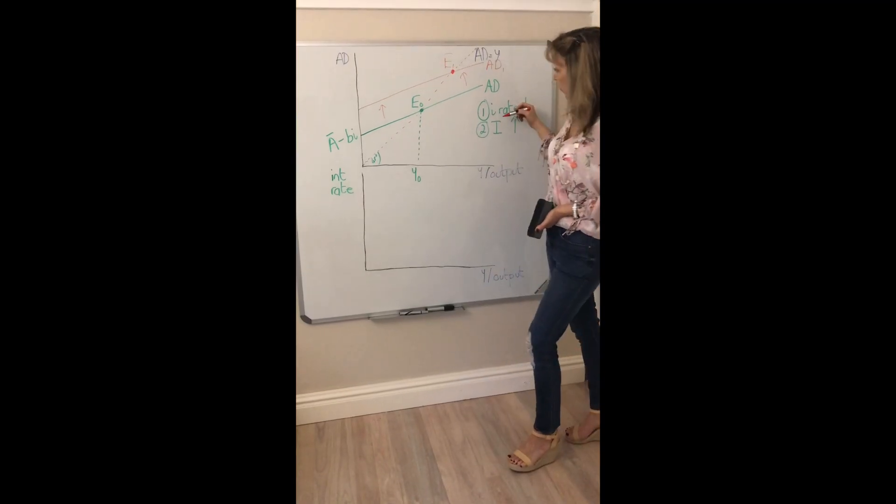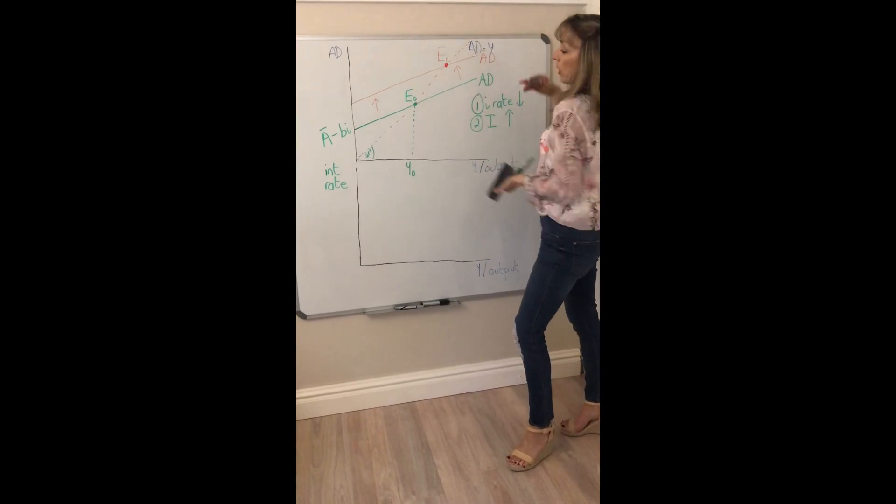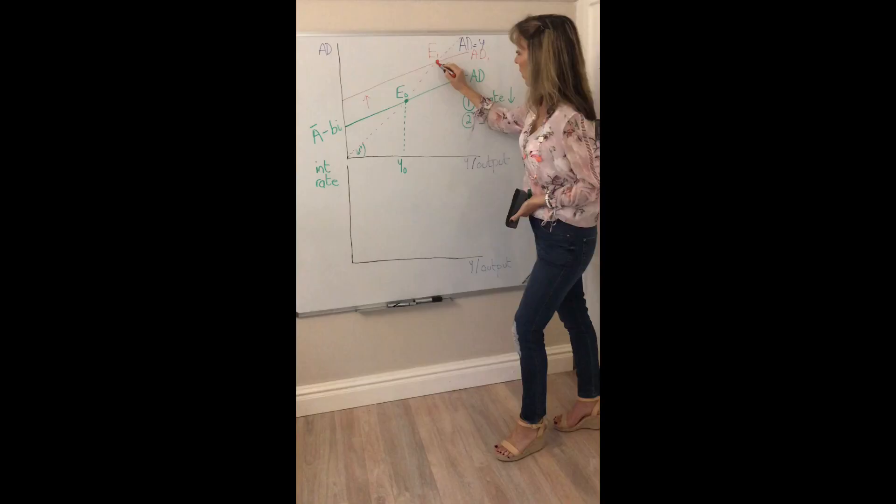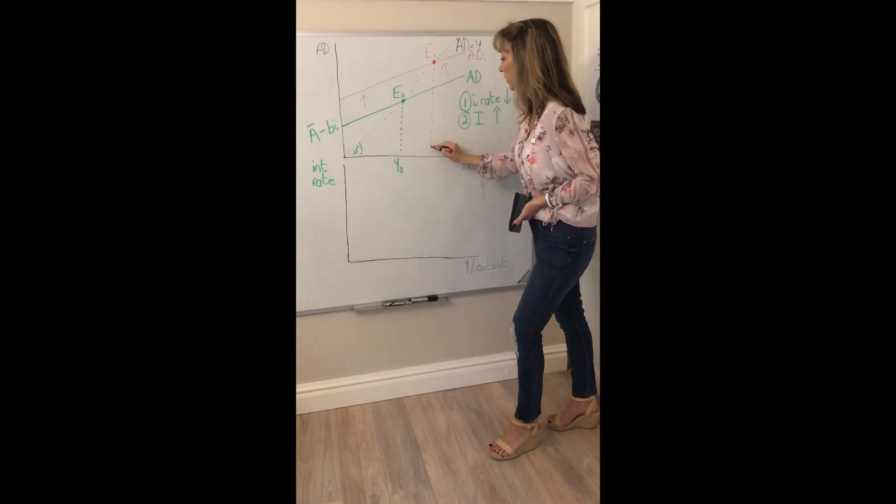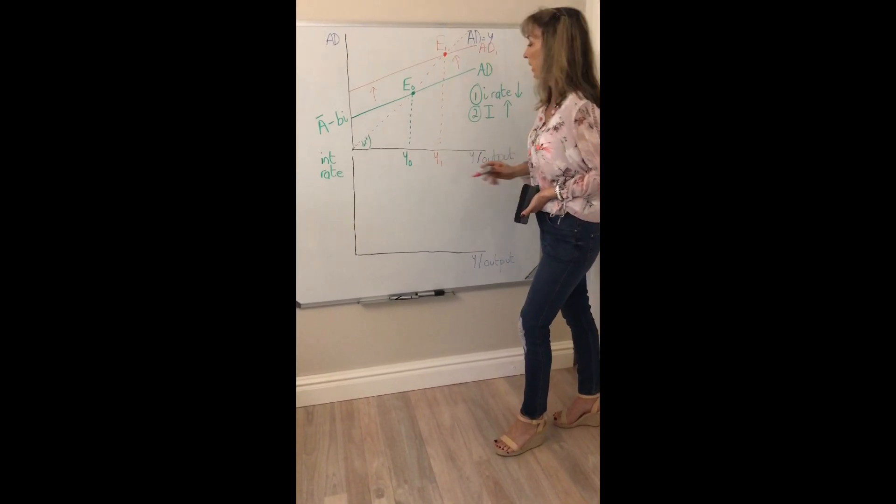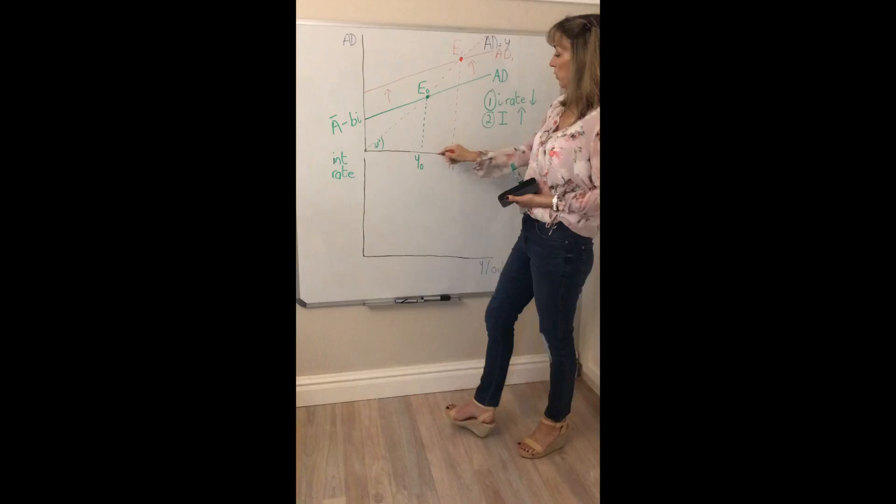So as interest rate has dropped, investment's risen, aggregate demand's increased and we get a new higher level of equilibrium income, Y1. We've moved from there to there.